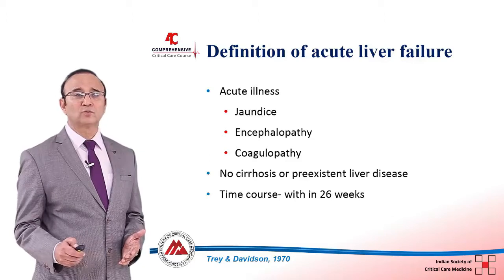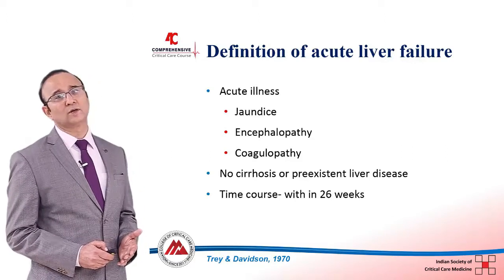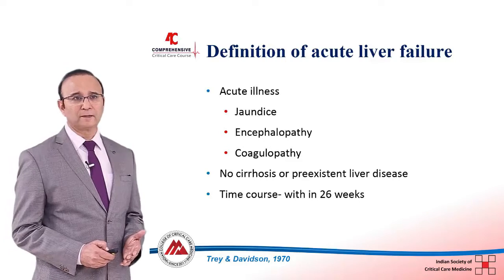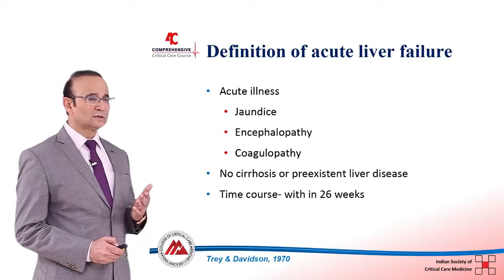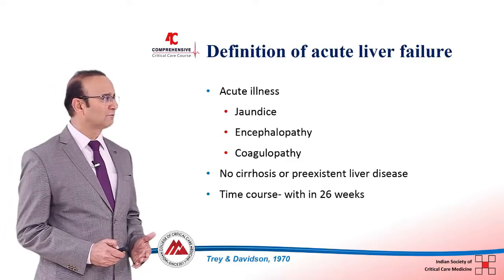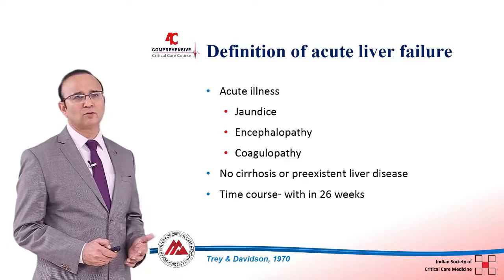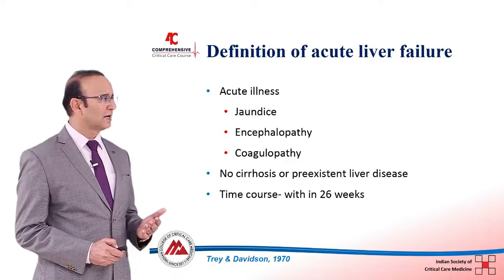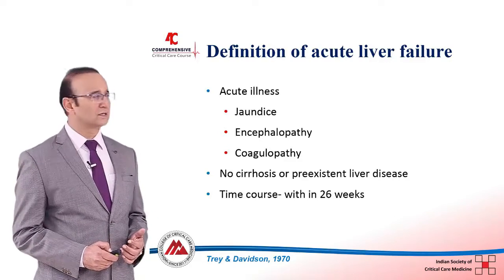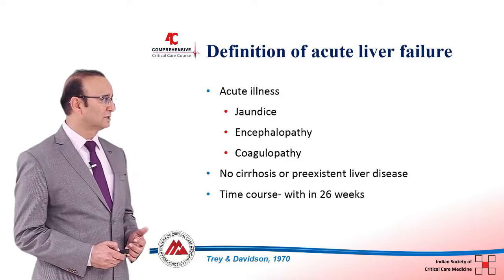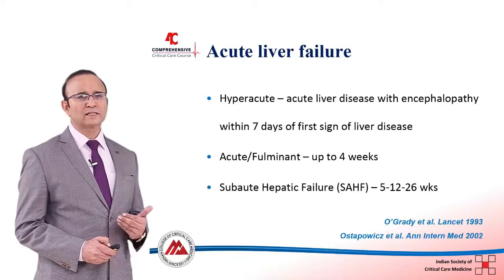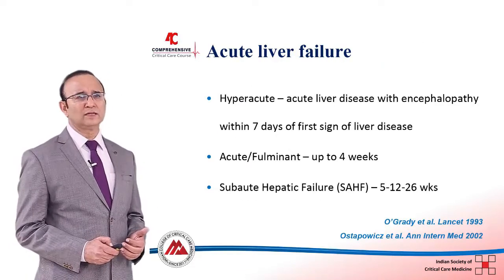The time course given to classify it as acute liver failure is from the initial onset of jaundice up to 26 weeks. All four criteria have to be present: jaundice, encephalopathy, coagulopathy, and the patient should have no cirrhosis or pre-existing liver disease.